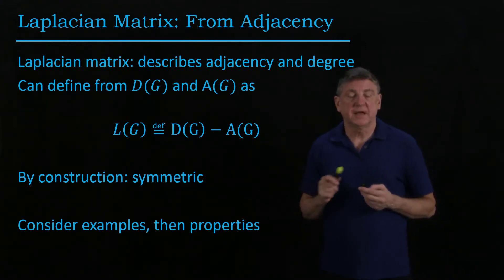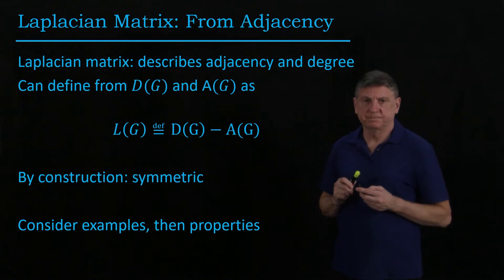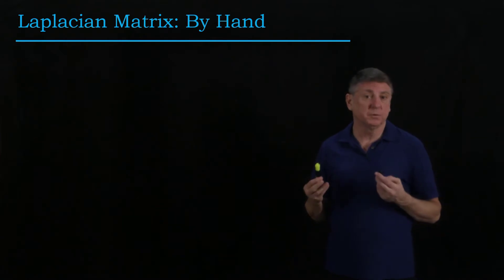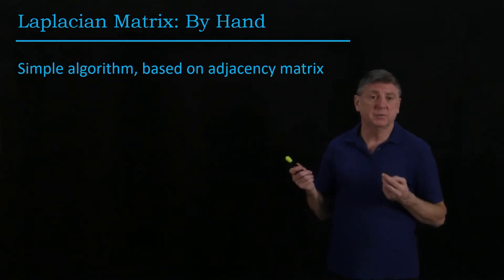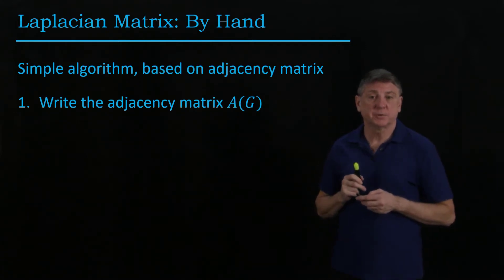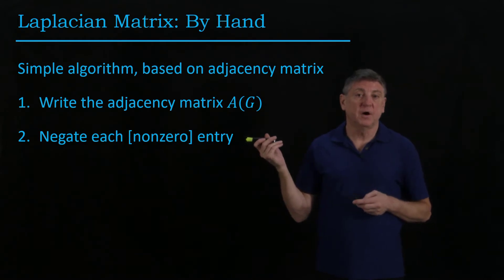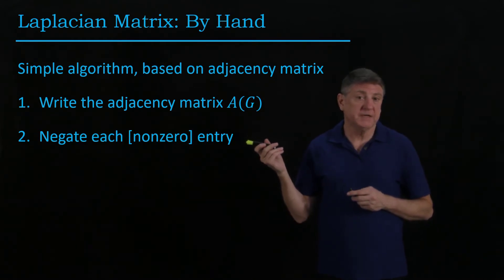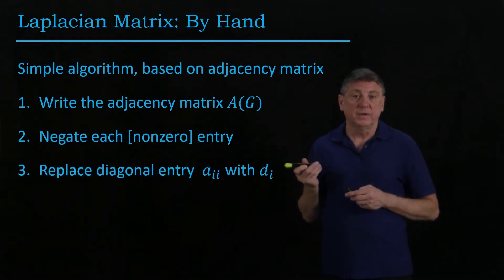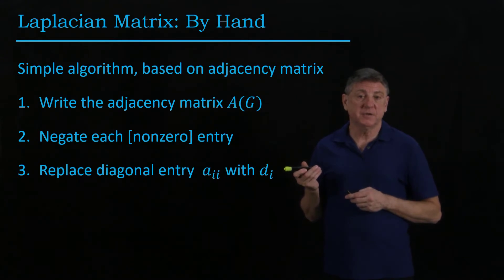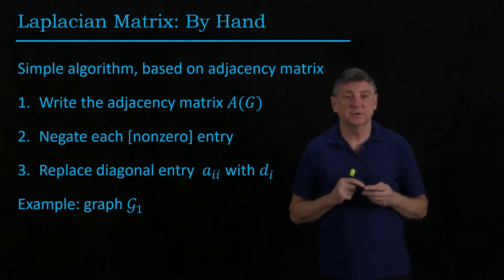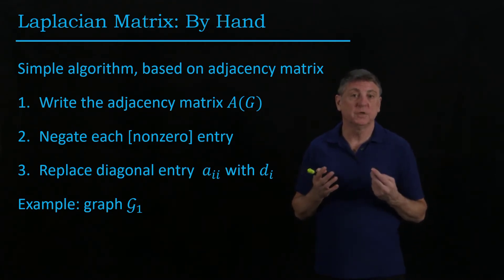Let's look at some examples and then consider the properties. It's really useful to go through this material by hand, and that's what we'll do for the rest of this session. There's a simple algorithm: first, write the adjacency matrix for the graph. Then for every off-diagonal non-zero entry, put a minus sign in front of it — this computes minus A_G. Then replace the diagonal entries with the degree of the vertex.